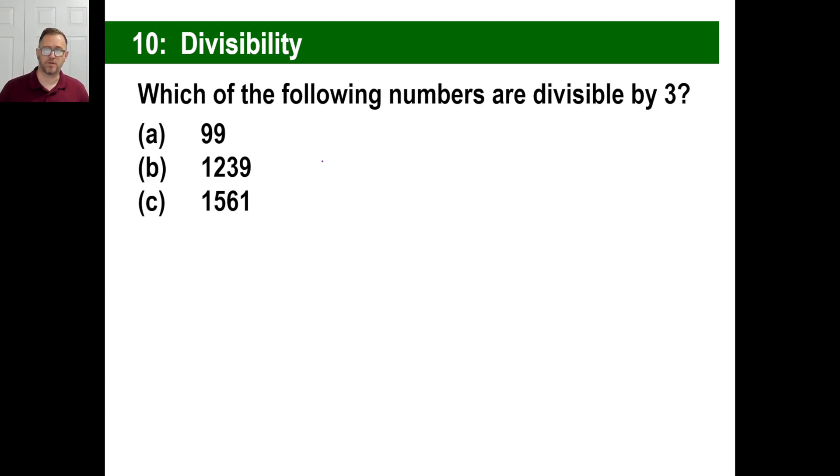Which of these numbers are divisible by 3? Let's take a look at this. Is this divisible by 3? Well, 9 plus 9 is 18. 18 is divisible by 3. So, yep. There it is. 1,239. 1 plus 2 is 3. 3 plus 3 is 6. 6 plus 9 is 15. 15 is divisible by 3. So that number is as well.